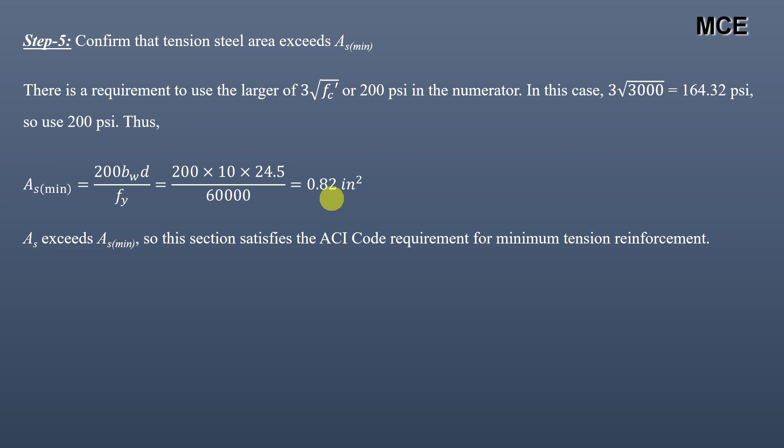This is how you calculate the design moment for flanged beams or T-beams when the depth of the neutral axis lies in the web. I hope you fully understand the concept and learned something new from this video. If you find my videos helpful, please subscribe to my channel and share this video. Thanks for watching, and see you in the next video.